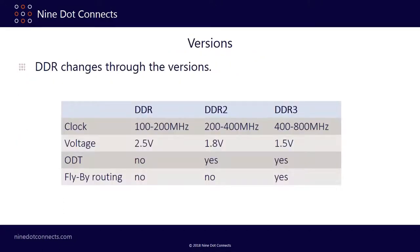Comparing DDR2 and DDR3: the basic clock rate has increased while voltage has dropped from 2.5 down to 1.5 volts, which is where you get your reduction in power consumption and allows faster rise times. On-die termination started in DDR2, but DDR3 specifically features dynamic on-die termination. Flyby routing is something new to DDR3 — if you've only done DDR or DDR2, you're really going to find this new aspect interesting.